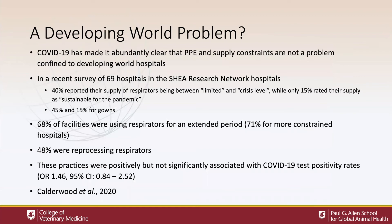Is this purely a developing-world problem? COVID-19 has made it abundantly clear that PPE and supply constraints are not confined to developing-world hospitals. I was part of a recent survey of 69 hospitals in the SHEA Research Network, asking about their policies as COVID-19 was taking shape. 40% reported their respirator supply as somewhere between limited and crisis level, while only 15% rated it as sustainable for the pandemic — very similar to how they rated their supply for protective gowns. 68% of hospitals were using respirators for extended periods, such as wearing a single respirator for an entire day rather than changing it between patients.